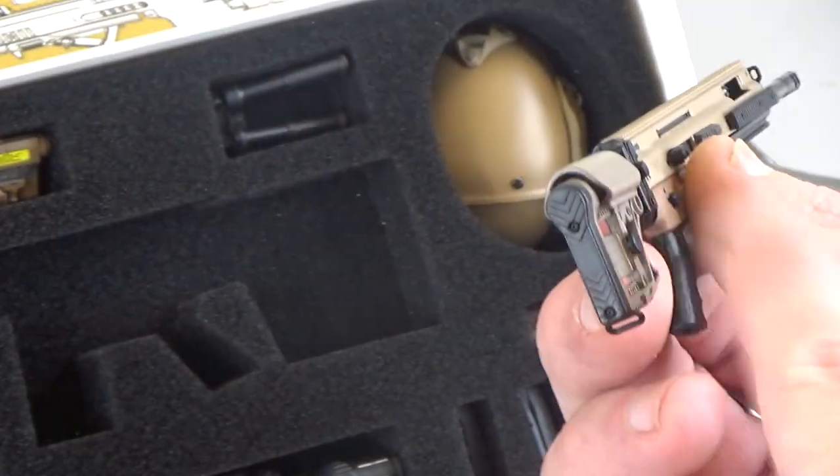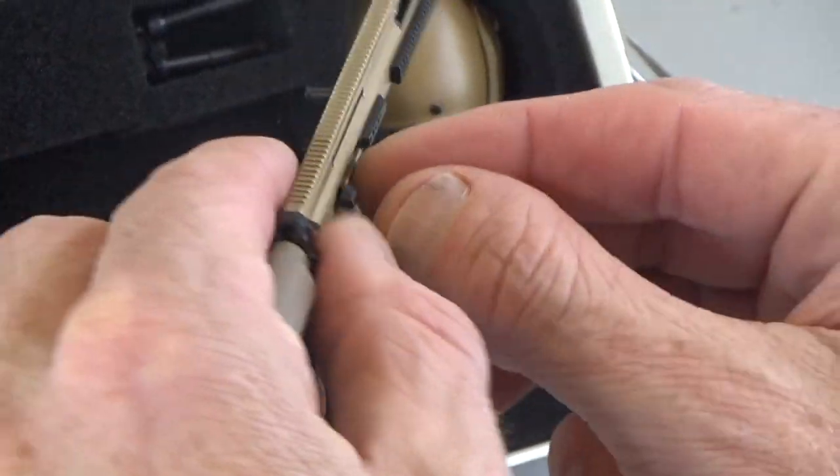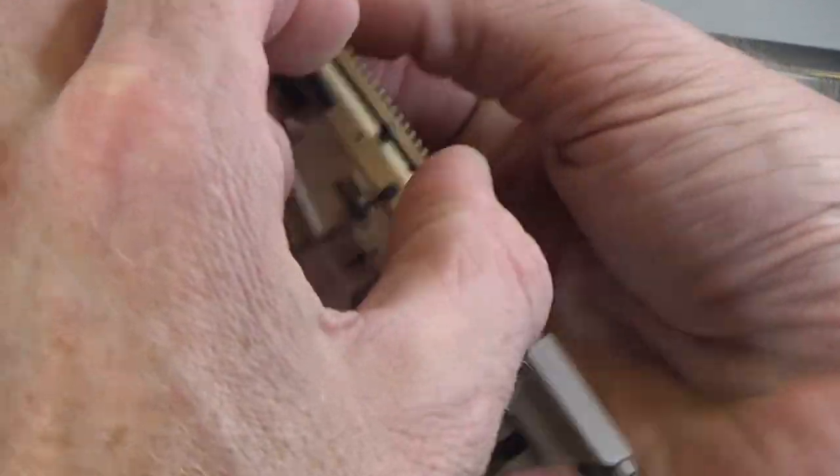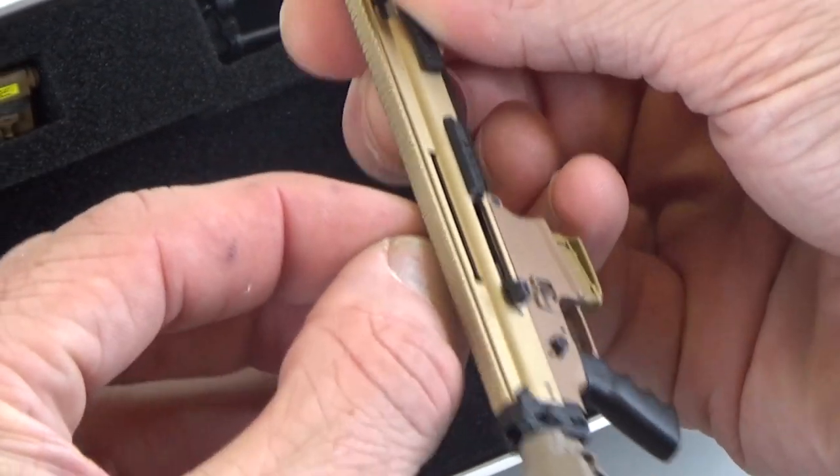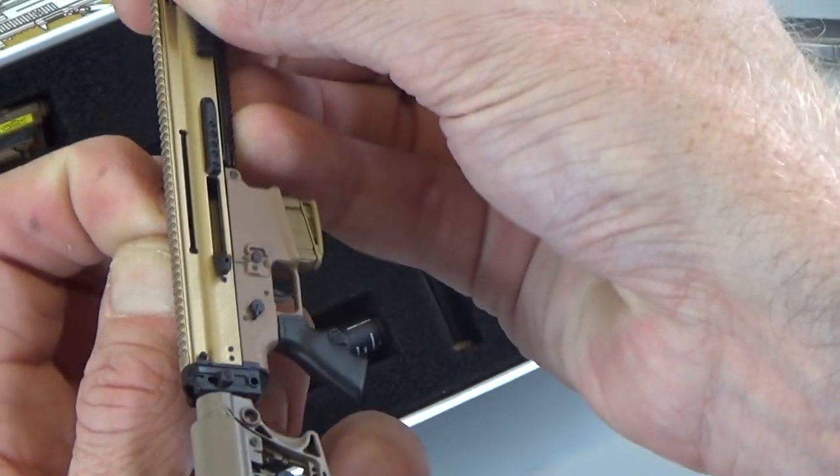So buttstock, cheek rest moves up and down. Right here, charging handle does move. You can actually see the bolt right there. You see that?